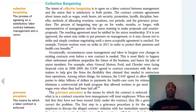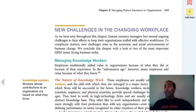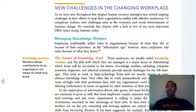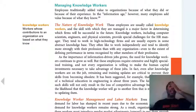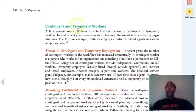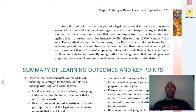Grievance procedure — this means a labor contract is enforced. If you have a grievance, you go through your grievance procedure, go to your union rep, and say, I have a grievance, here are the reasons why, how can we move forward and resolve this? New challenges in the workplace: knowledge workers are workers whose contributions are based on what they know — people want to pick your brain for how you can enhance the organization. Contingent and temporary workers — maybe if they're a really good temporary worker at Macy's, you keep them on as a full-time employee, or you just part ways and they come back next holiday season.